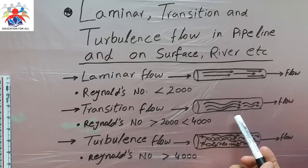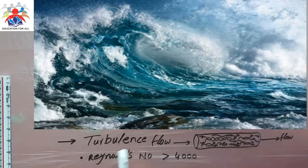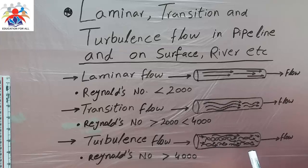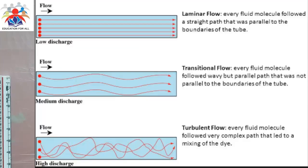The third type is turbulence flow. The Reynolds number in turbulence flow is greater than 4000, which means that the flow in the pipeline is completely disturbed, as you can see in the diagram.